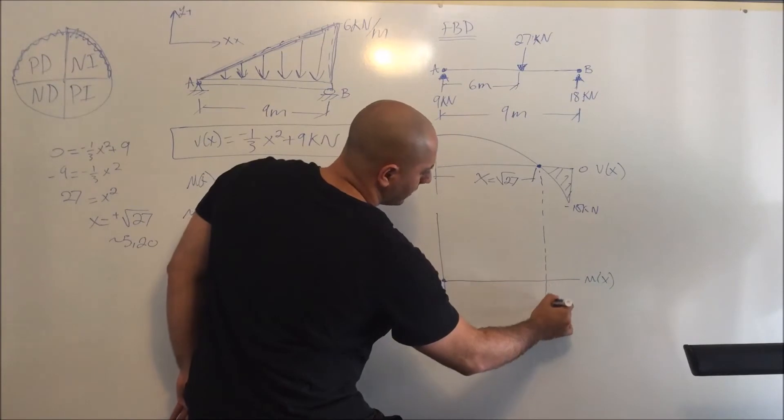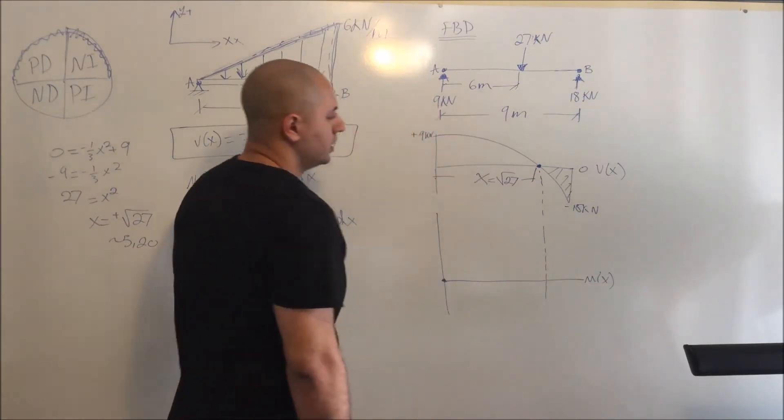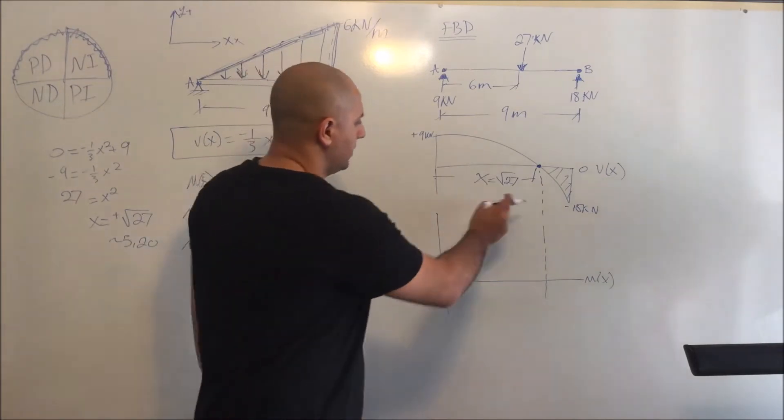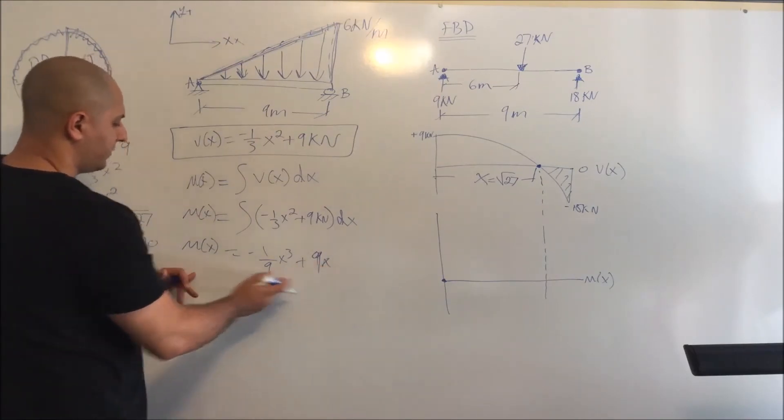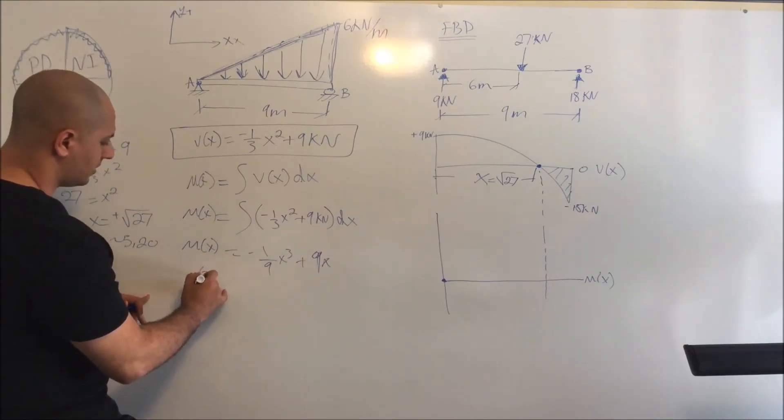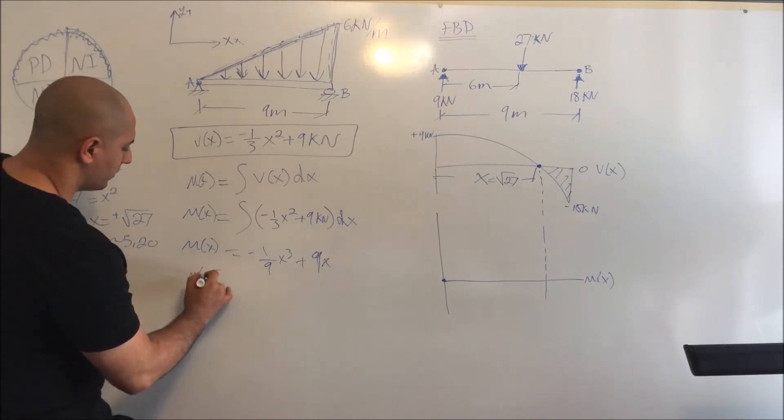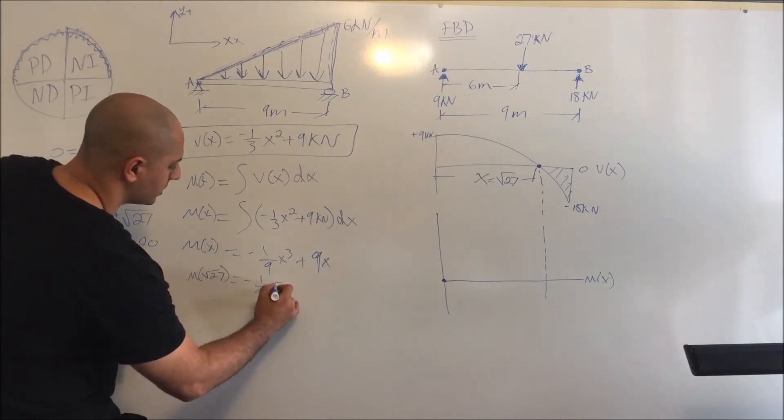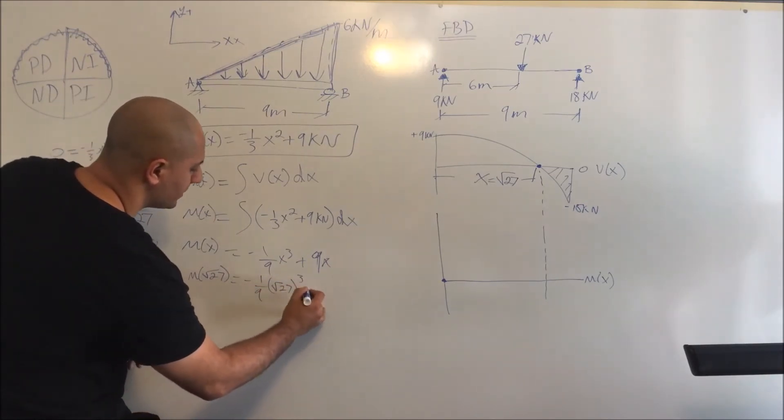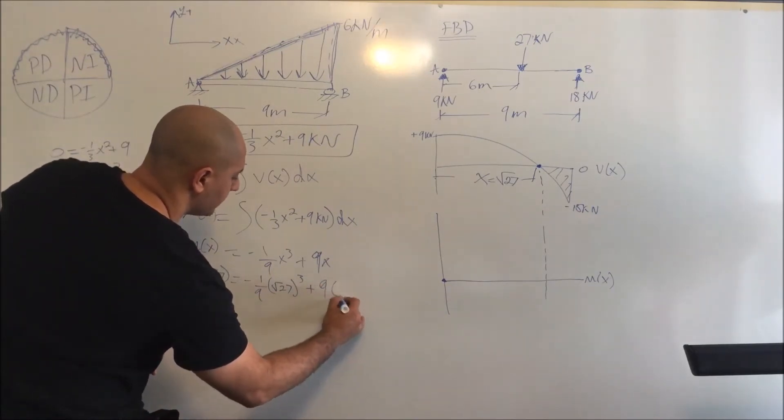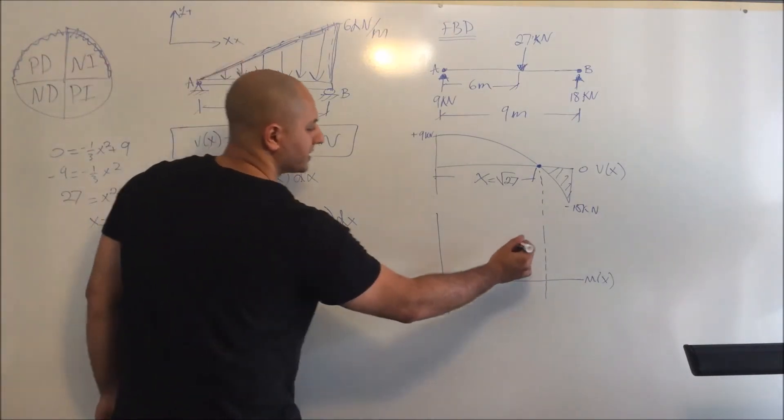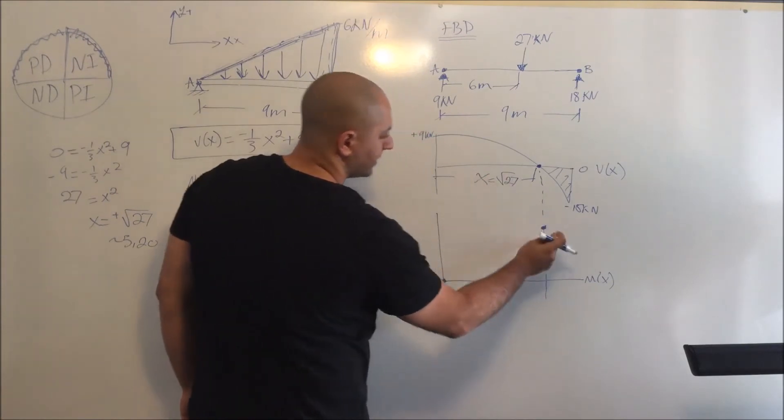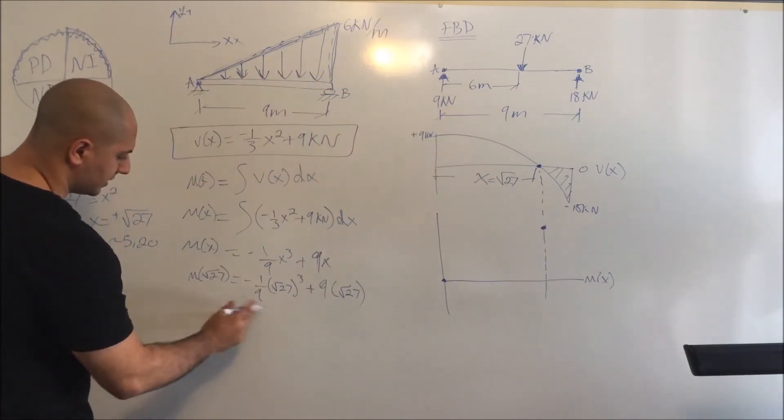Somewhere here is going to be my peak. In our case, now we go back into the moment formula. You already have the formula, so you plug it in. So I will say here: M of square root of 27 equals negative 1/9 times square root of 27 cubed plus 9 times square root of 27. You do the math, you'll get a point somewhere here. And this is going to be our maximum.